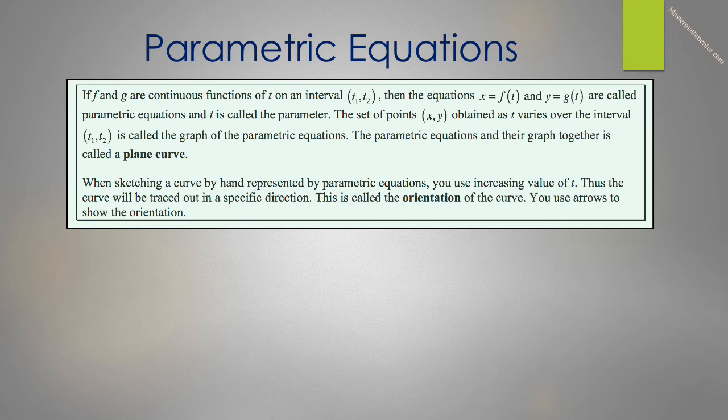Here is the definition of parametric equations. If f and g are continuous functions of t on some interval t1 to t2, then the equations x equals f of t and y equals g of t are called parametric equations, where t is called the parameter. The set of points x,y obtained as t varies over that interval is called the graph of the parametric equations. If we take the parametric equations and their graph together, it is called a plane curve. When sketching a curve by hand, we usually use increasing values of t, so the curve will be traced out in a specific direction. This is called the orientation of the curve, and to show that orientation, we use arrows.